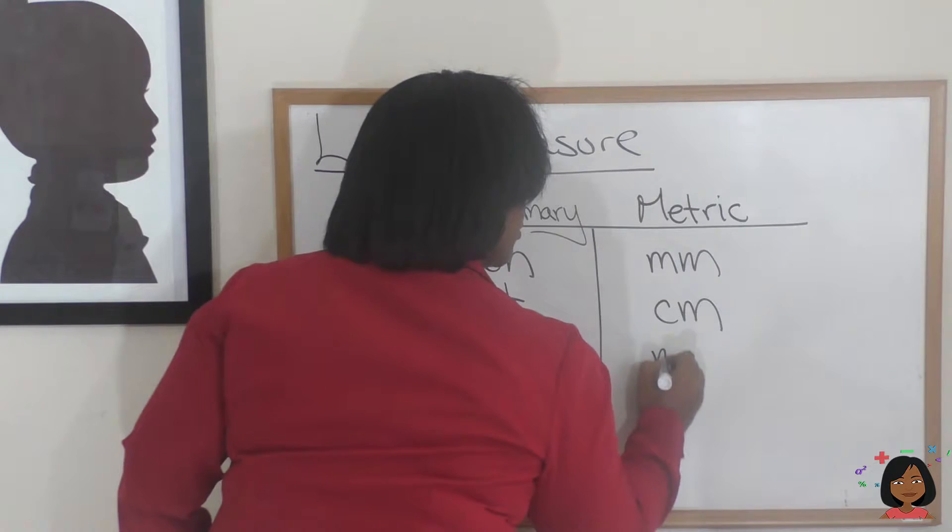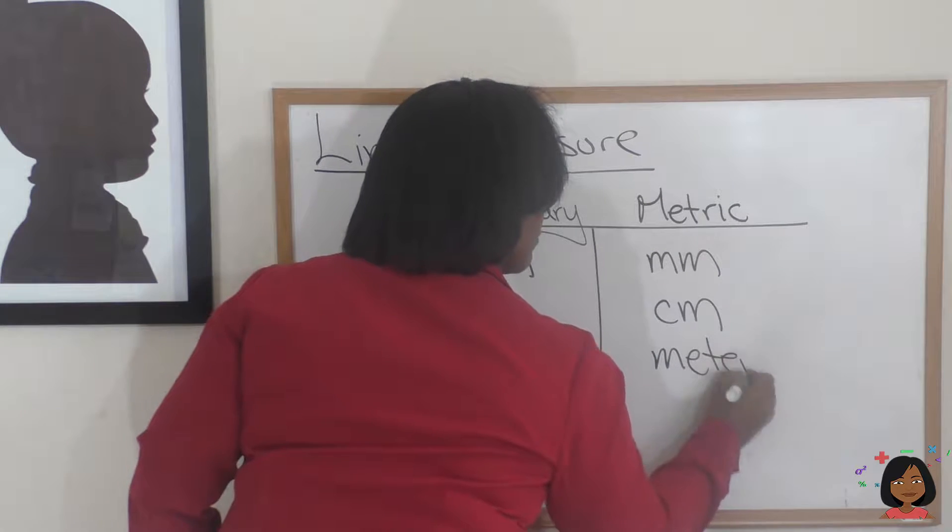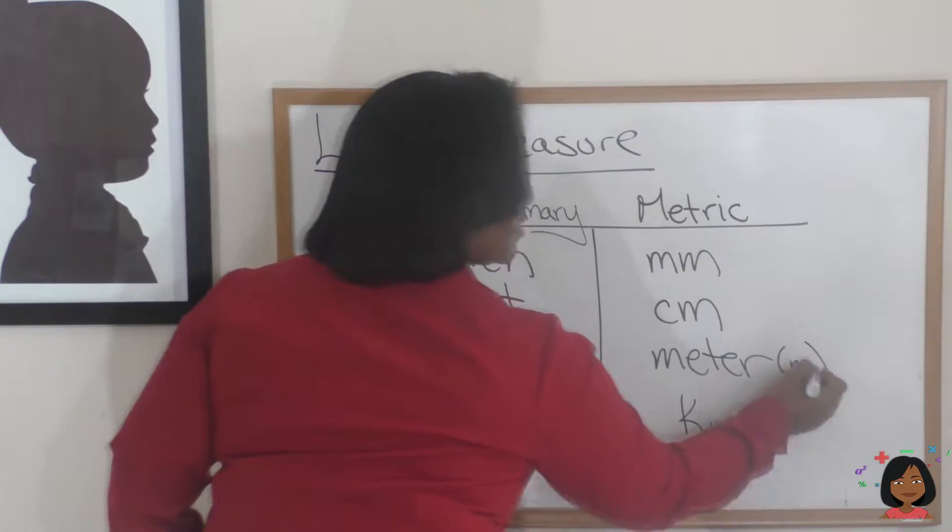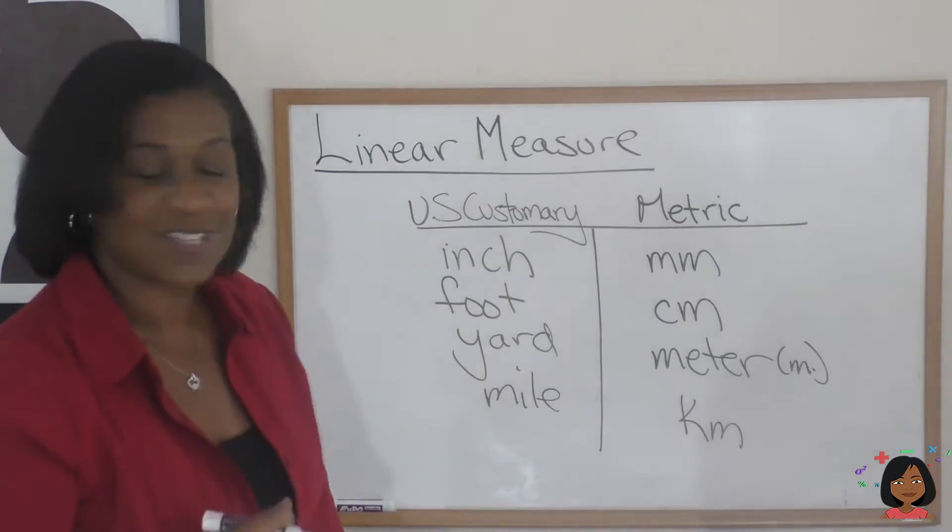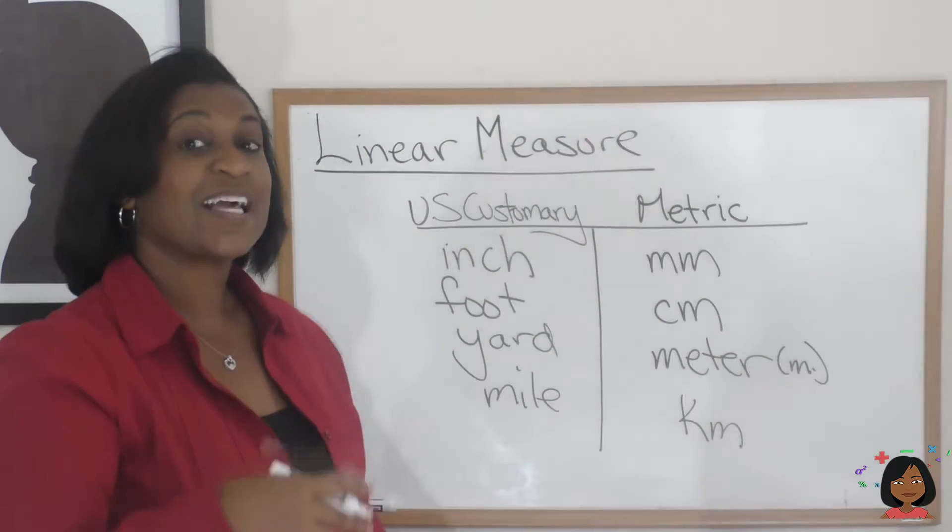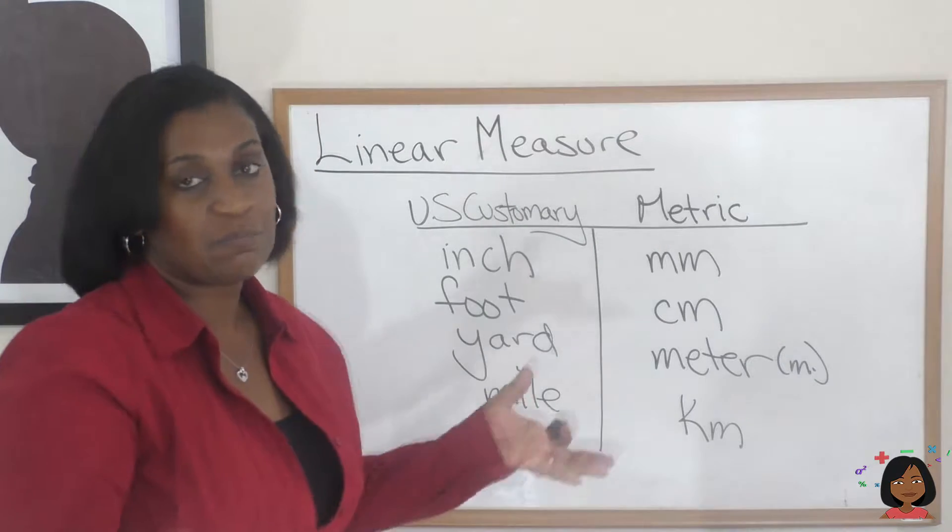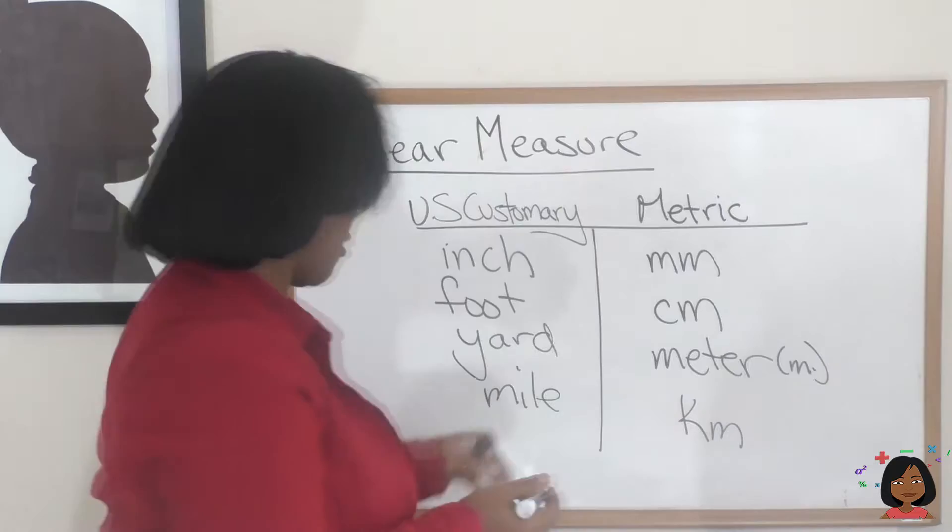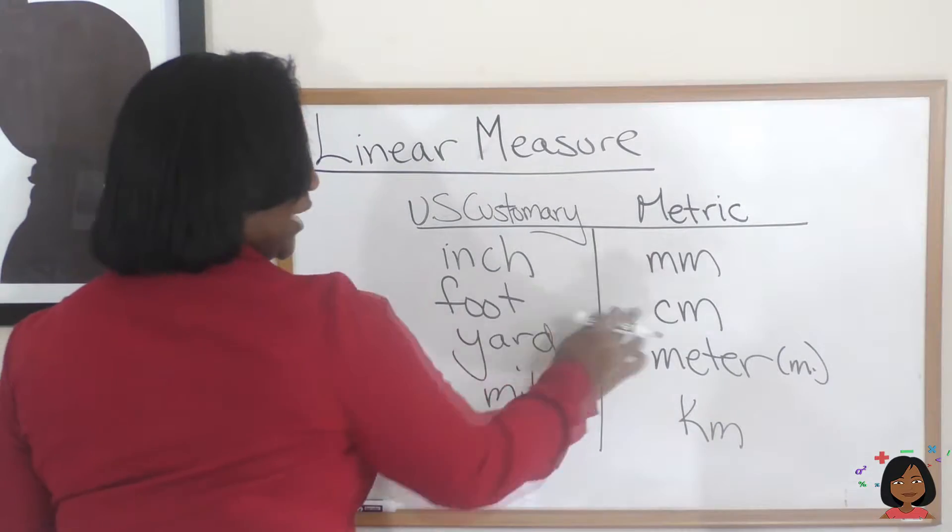We also have a meter, abbreviated as m. We also have a kilometer—it depends on how you'd like to say it. I say kilometer. And there you go. These are the ways that we kind of communicate.